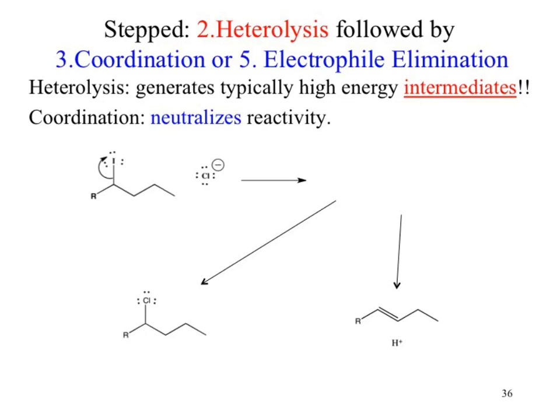The other version was going through a stepped process. So, starting with our substrate, if we're going to go stepped, what happens? I need to break the bond first in both cases. So I break that bond — what do I get? What's the product of that broken bond? Two ions.